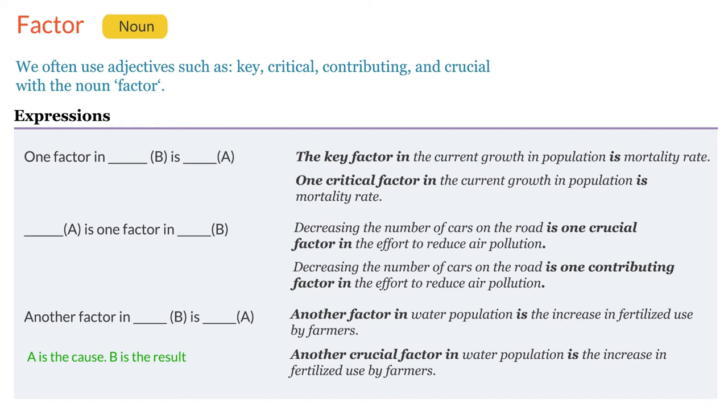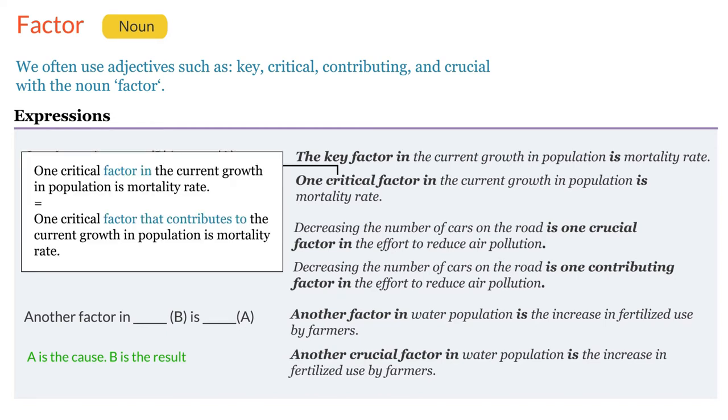If you don't want to use factor in in any of the above sentences, you can use factor that contributes to something instead. Take this sentence for example. One critical factor in the current growth in population is mortality rate. You can change it to one critical factor that contributes to the current growth in population is mortality rate.